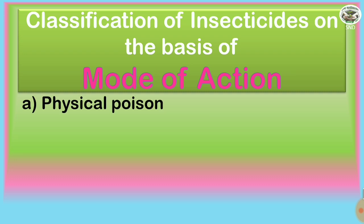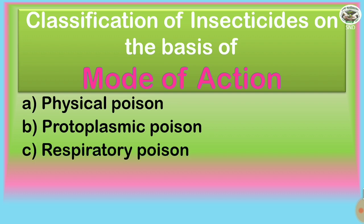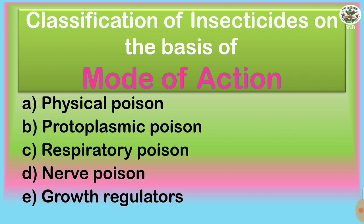The first is physical poison, then protoplasmic poison, respiratory poison, nerve poison, and insect growth regulators.